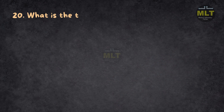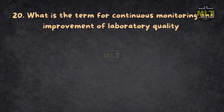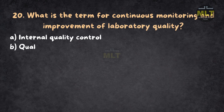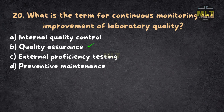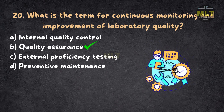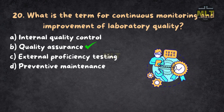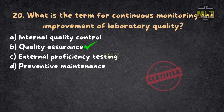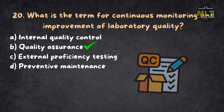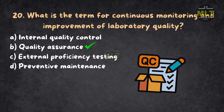Question 20: What is the term for continuous monitoring and improvement of laboratory quality? a. Internal quality control. b. Quality assurance. c. External proficiency testing. d. Preventive maintenance. Correct answer: b. Quality assurance. Quality assurance is a comprehensive process that includes QC, proficiency testing, and continual improvement of lab operations. It ensures all phases of testing meet quality standards. QC is a subset of QA, focusing on specific test controls.